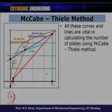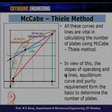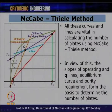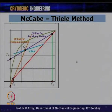The slopes of the operating line and Q line, the equilibrium curves, and the purity requirements xB and xD form the basis to determine the number of plates. All these parameters — xB, xD, slopes of operating lines, slope of Q line, and equilibrium curves — are required to calculate the theoretical number of plates for a given separation problem.